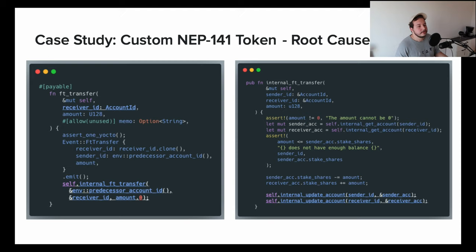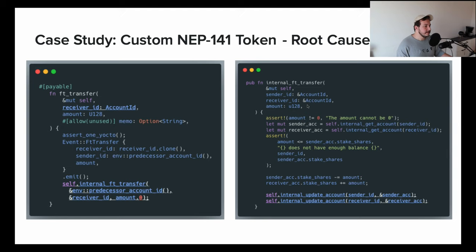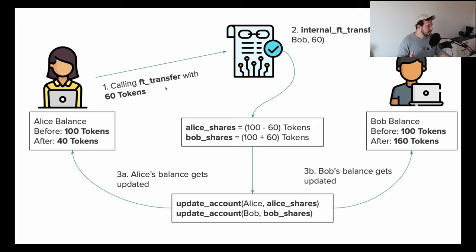There is ft_transfer, which calls internal_ft_transfer. We ensure the amount is not zero, the sender comes from predecessor_account_id, and the receiver ID is passed by the user. We get accounts, ensure they exist, ensure the sender actually has the amount they're trying to transfer, subtract from the sender, add to the receiver, then update accounts — inserting new amounts to storage. That's how it's supposed to work.